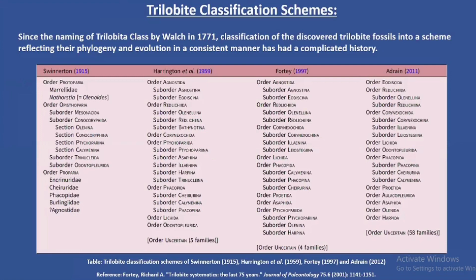Up next is the trilobite classification schemes. Since the naming of the trilobite class by Walsh in 1771, the classification of trilobites has had a complicated history. In the past, whenever a particular anatomical or functional feature was discovered, or a new trilobite fossil was found, this led to attempts at classifying trilobites based on their features. The classification scheme was done reflecting their phylogeny and evolution in a consistent manner. Here in this table we can see four major trilobite classification schemes.